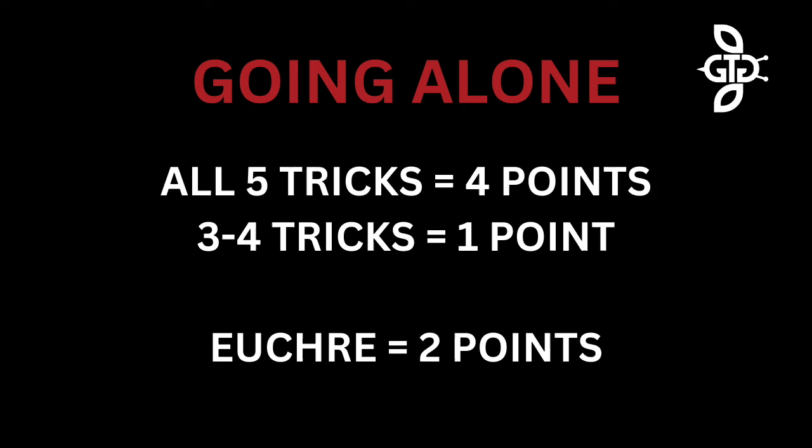If the player going alone wins all five tricks, their team is awarded four points. If the going alone player wins three or four tricks, their team is still awarded one point. If the opponents win three or more tricks, they get the euchre and are awarded two points.